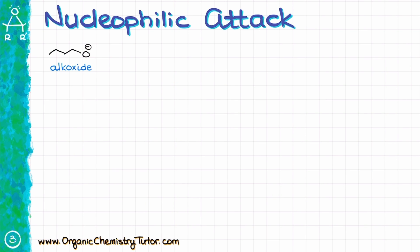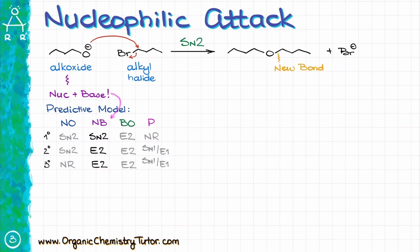So, once we have our alkoxide, we are going to add our alkyl halide to our mixture to have those two species react with each other. And since alkoxides are both nucleophiles and bases, we are going to face certain limitations here.